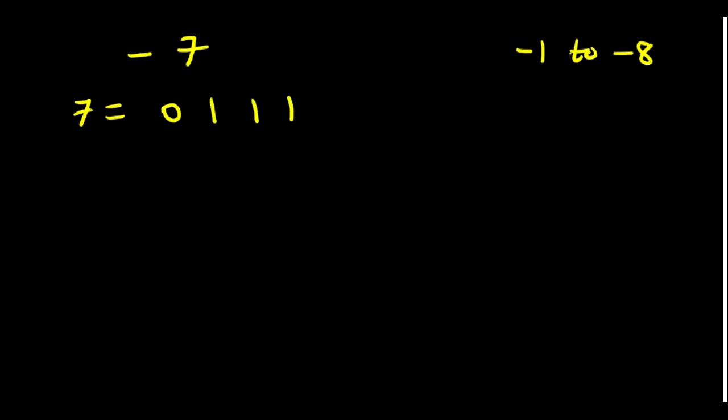Now what do you do? You will invert them or we will take the one's complement of it. If we invert, what do you get? 1, 0, 0, 0. After that, you have to add one to it. So 1, 0, 0, 1.